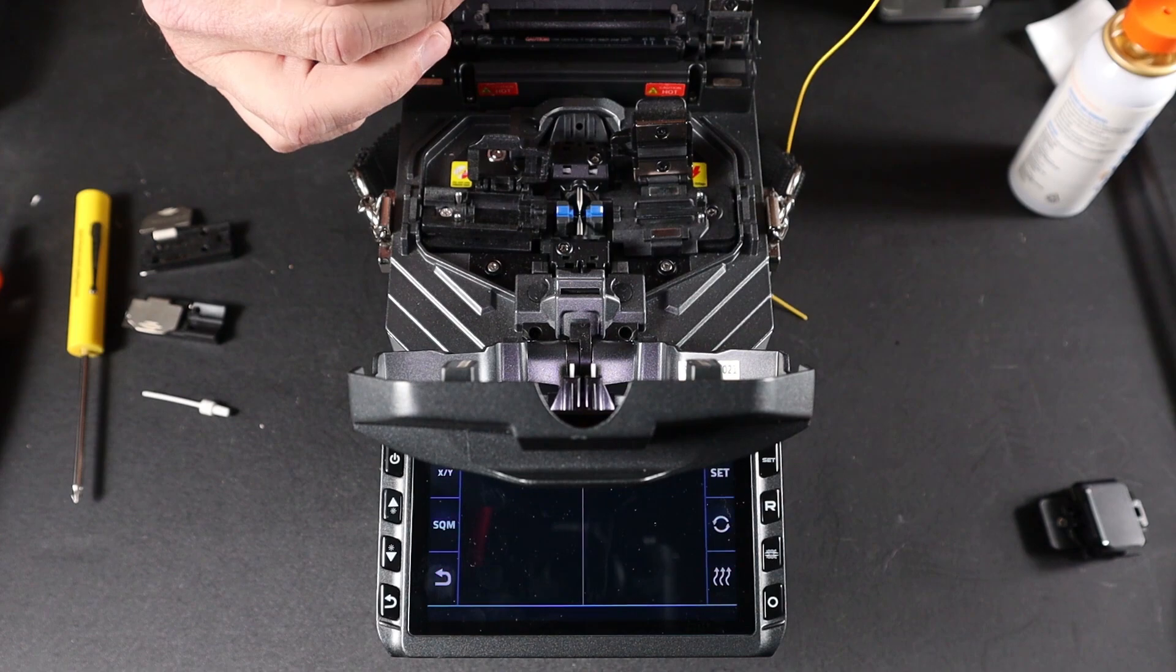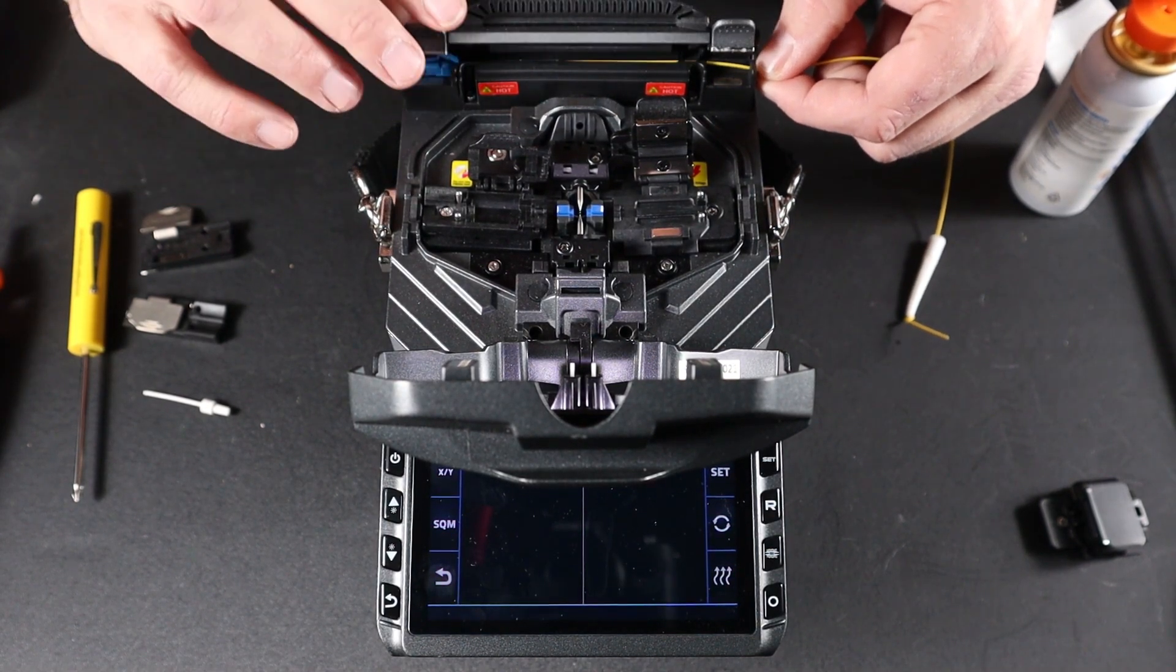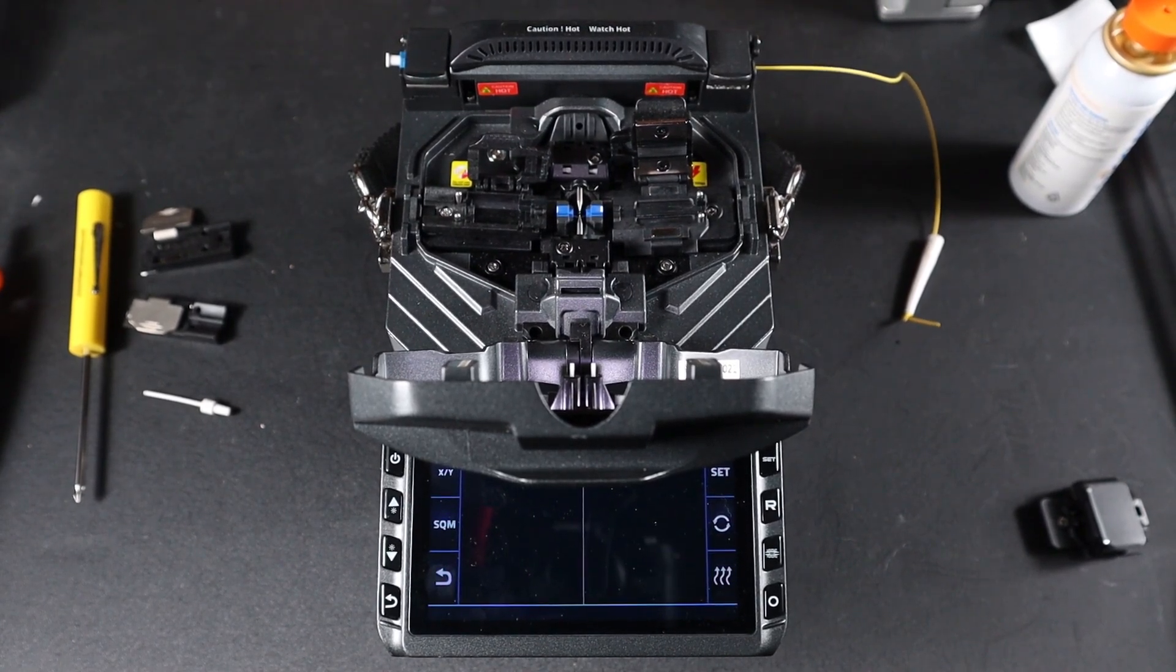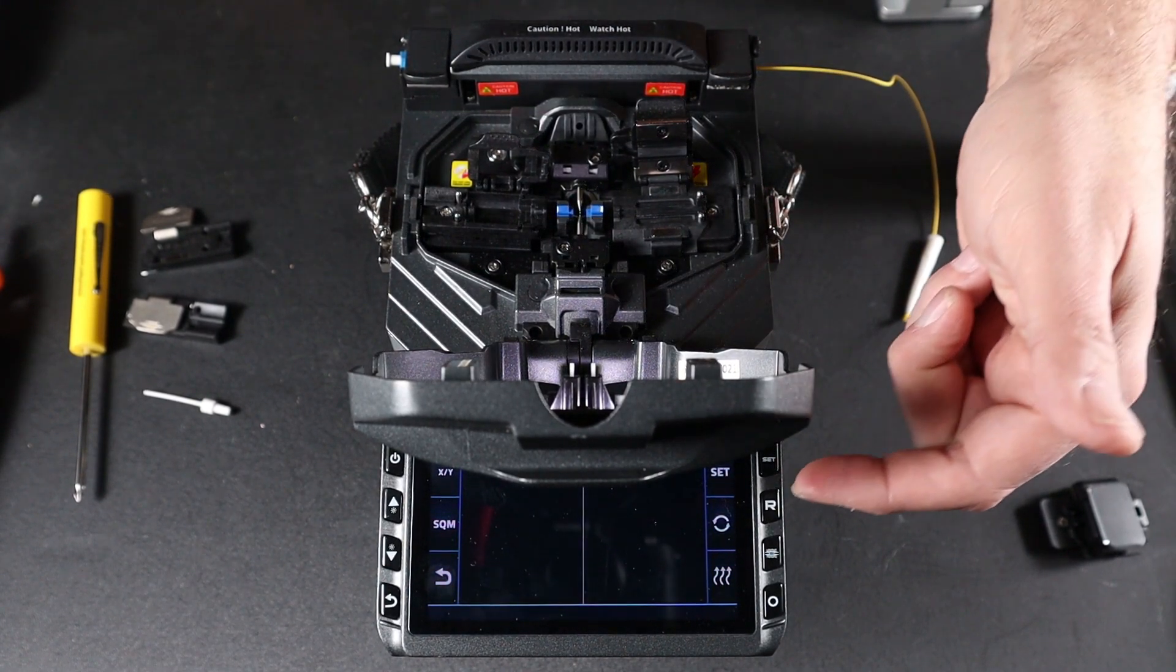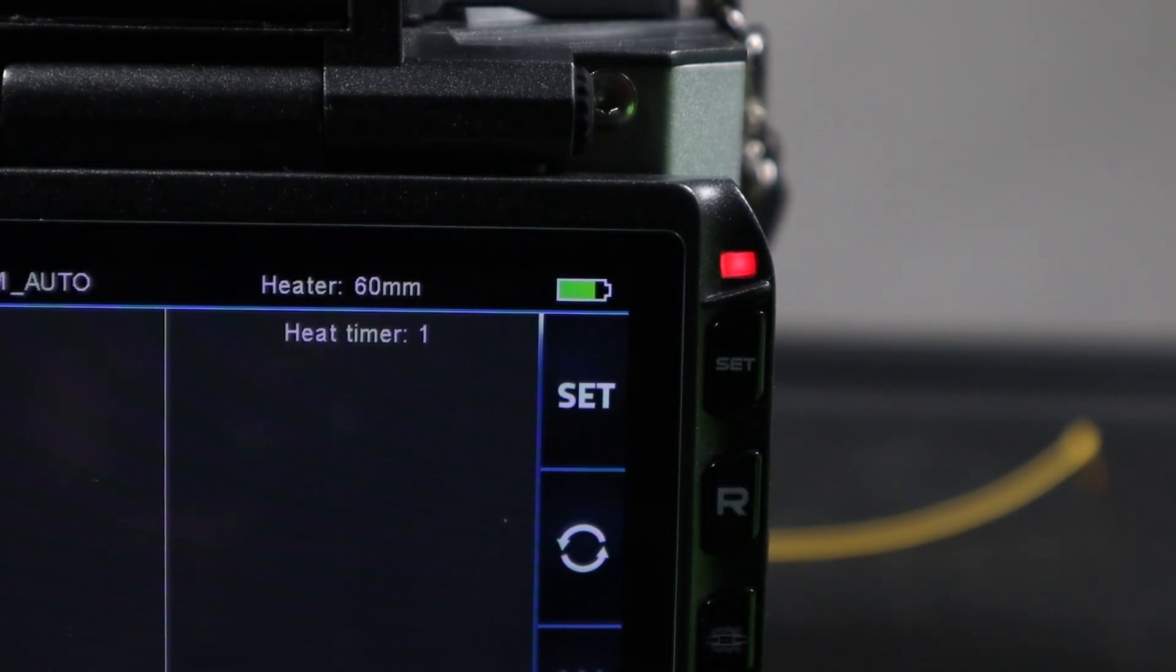Open your oven. Place your connector in. Close down. At this point, you will turn your oven on. Wait for your red light to go out.